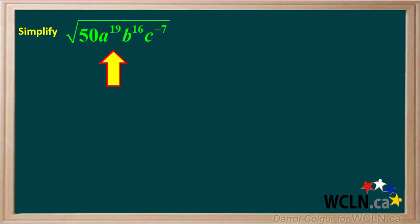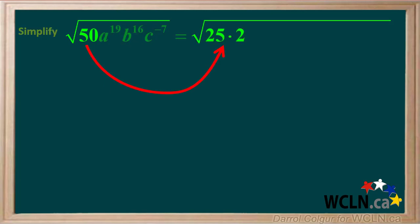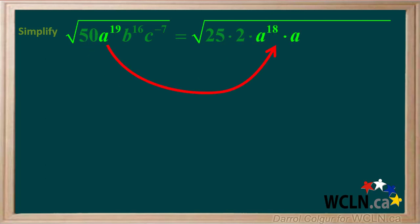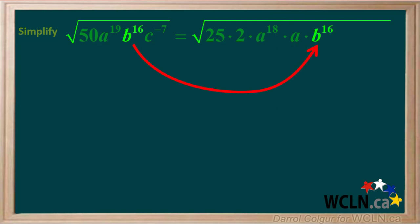Let's do a more complex example. We're asked to simplify the square root of 50a to the 19th b to the 16th c to the negative 7th. We'll break 50 up to the perfect square 25 times 2. a to the 19th can be broken down to a to the 18th times a. b to the 16th already has an even exponent, so it can remain as b to the 16th.